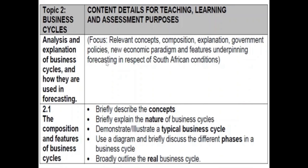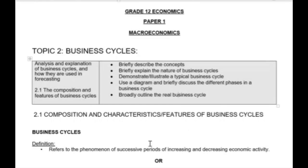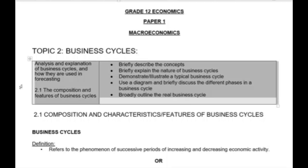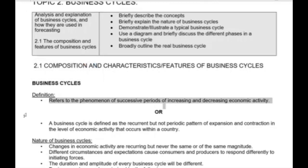Before we do this presentation, let's quickly look at the notes. This gray part in the notes is the exam guideline showing what you must study. If they only ask you to briefly describe a concept, you basically need one sentence for two marks. For example, the definition of a business cycle: it refers to the phenomenon of successive periods of increasing and decreasing economic activity. That's enough — make it a flashcard.